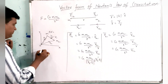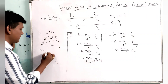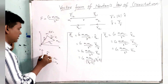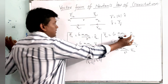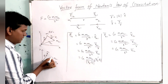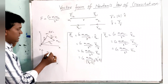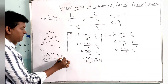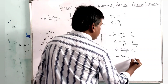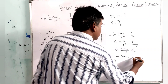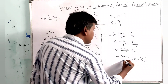Similarly, for F21, we consider the direction towards M1 from M2 — that is, from M2 (initial) to M1 (final). The displacement is R1 minus R2. So F21 equals G M1 M2 by R cubed times (R1 minus R2) bar, where R cubed is replaced by modulus of (R1 minus R2) whole cubed.